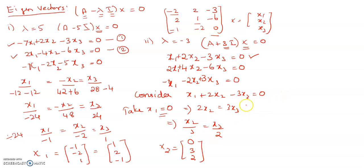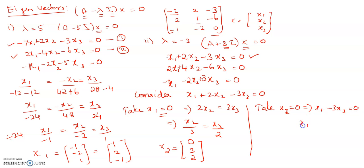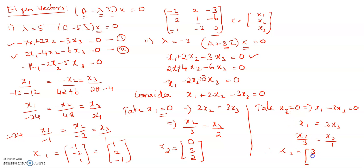To find the third eigenvector, take x2 equals 0. When x2 is 0, the equation becomes x1 minus 3x3 equals 0, so x1 equals 3x3, giving x1 over 3 equals x3 over 1. Therefore, the third eigenvector is (3, 0, 1).